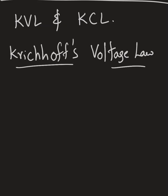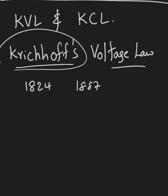In this video, I'm going to talk about Kirchhoff's Voltage Law and Kirchhoff's Current Law. Kirchhoff is a German physicist, born in 1824 and died in 1887, so he lived around 63 years. He is the one who invented Kirchhoff's Voltage Law and Kirchhoff's Current Law.